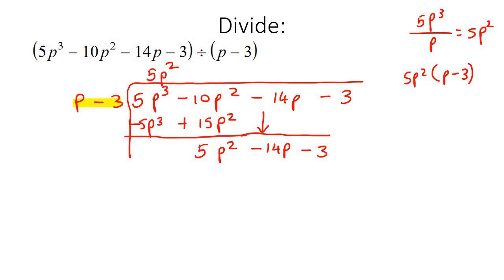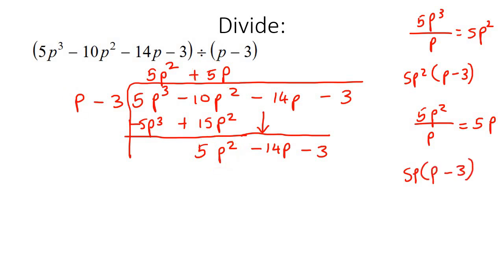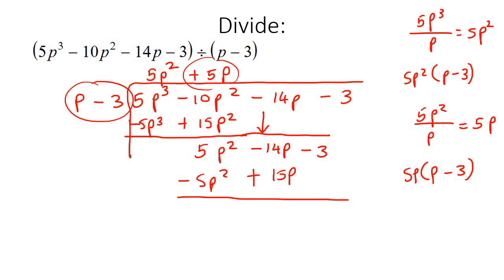We start the process again. The highest power in our remainder is 5p², and the highest power in the divisor is p, so 5p² divided by p gives 5p. We put 5p at the top, multiply it with p minus 3 to get 5p² take away 15p, then switch the signs. Adding everything: the 5p² terms cancel, and negative 14 plus 15 gives positive 1p, then bring down negative 3.